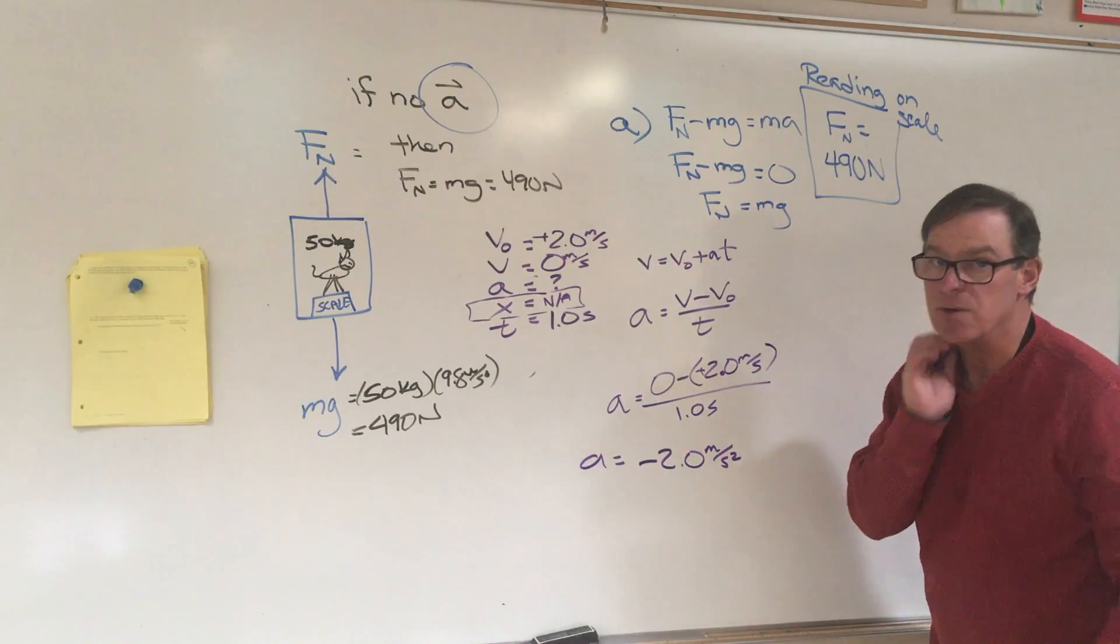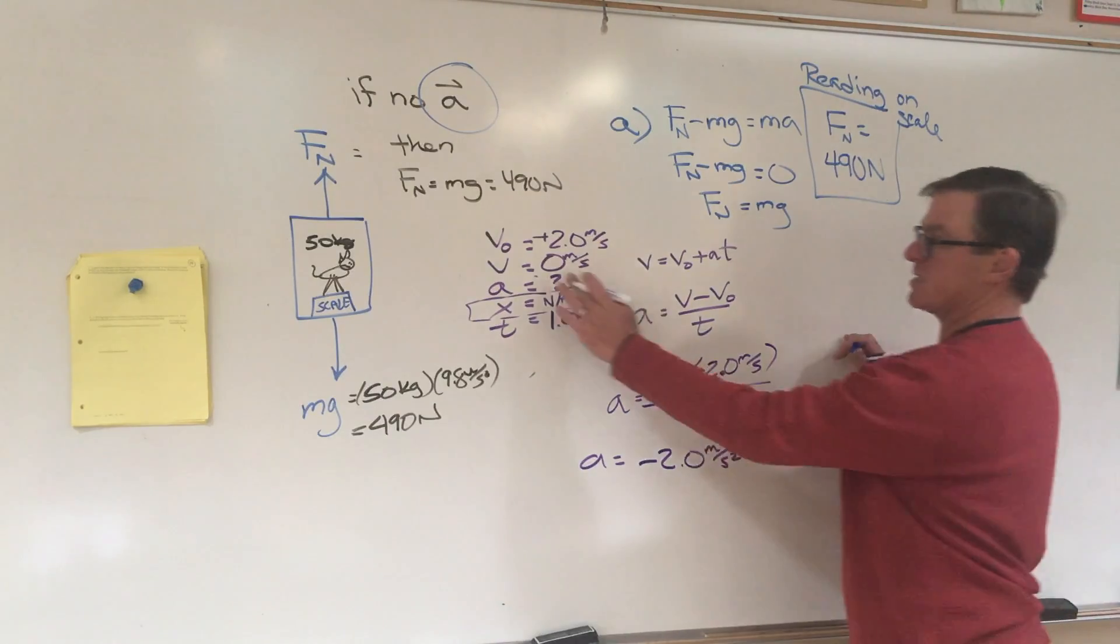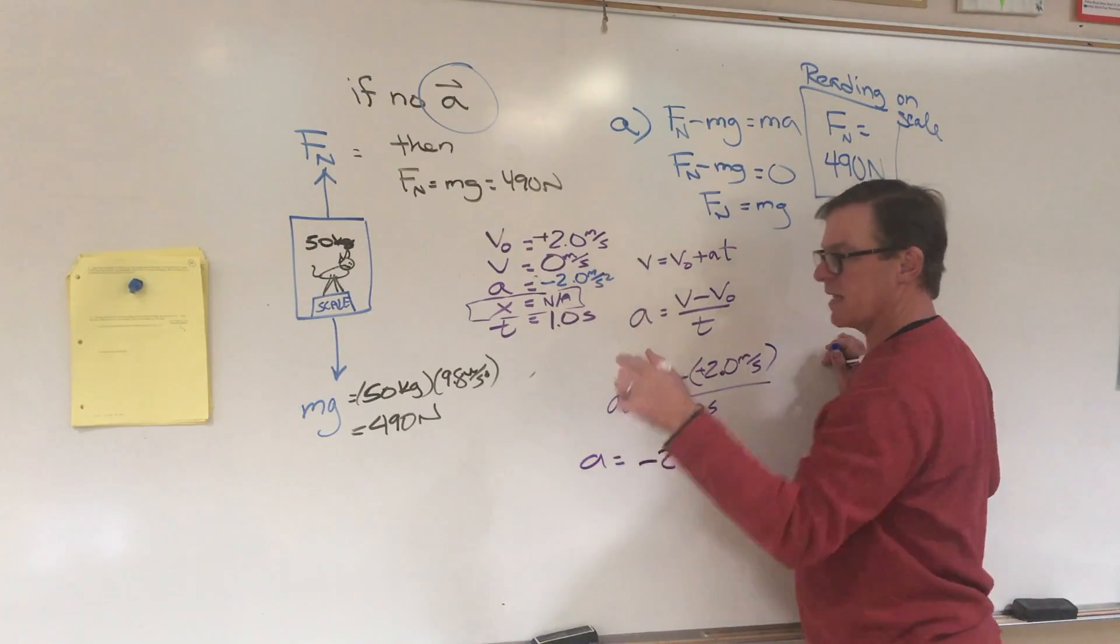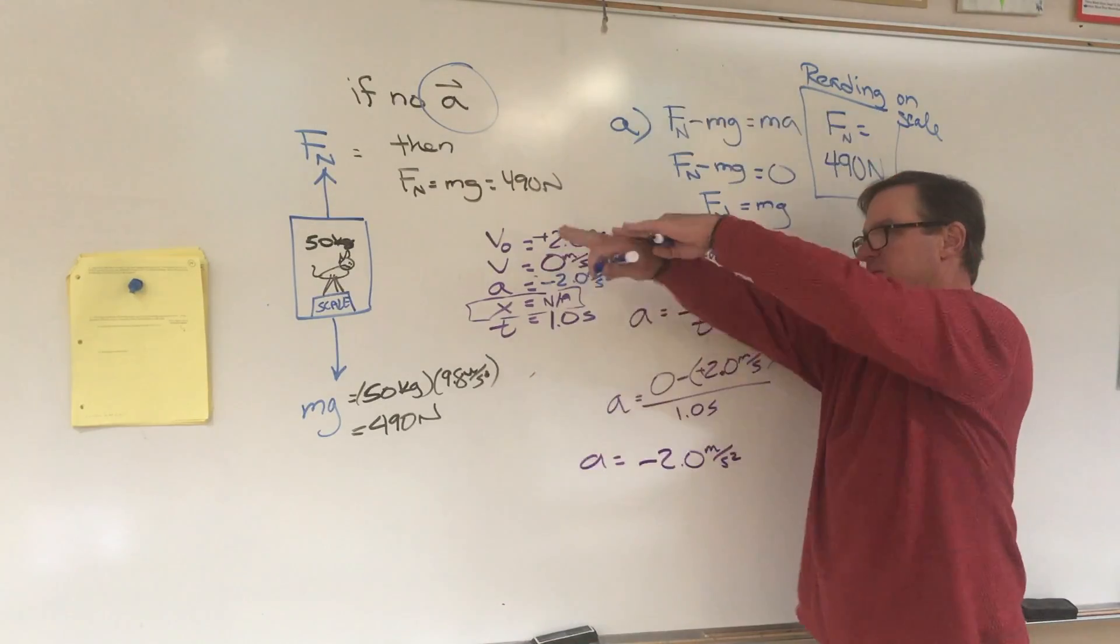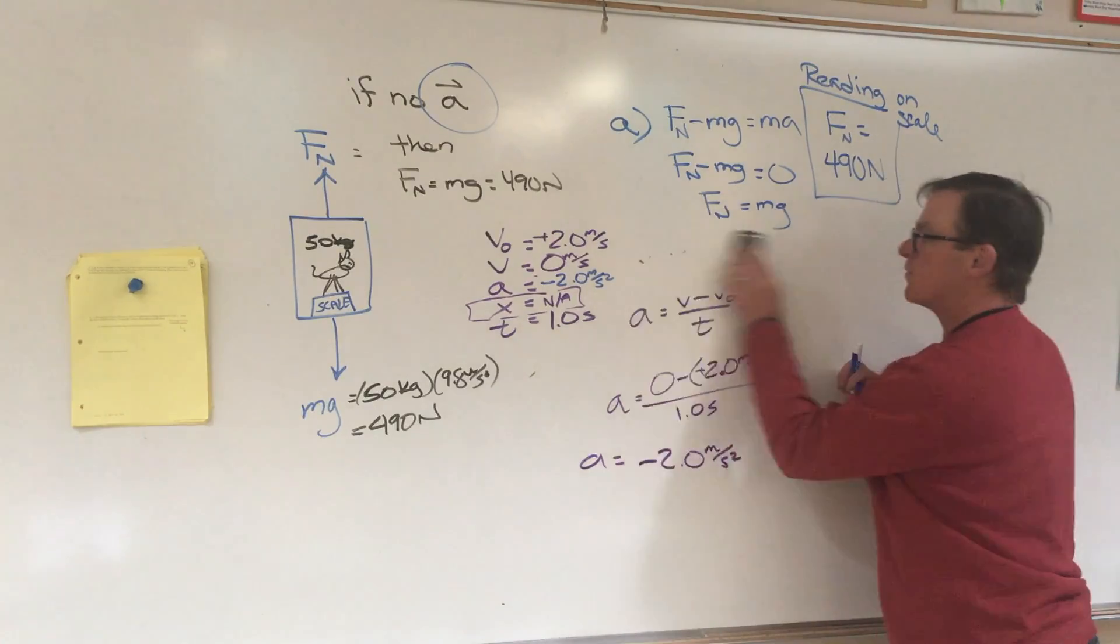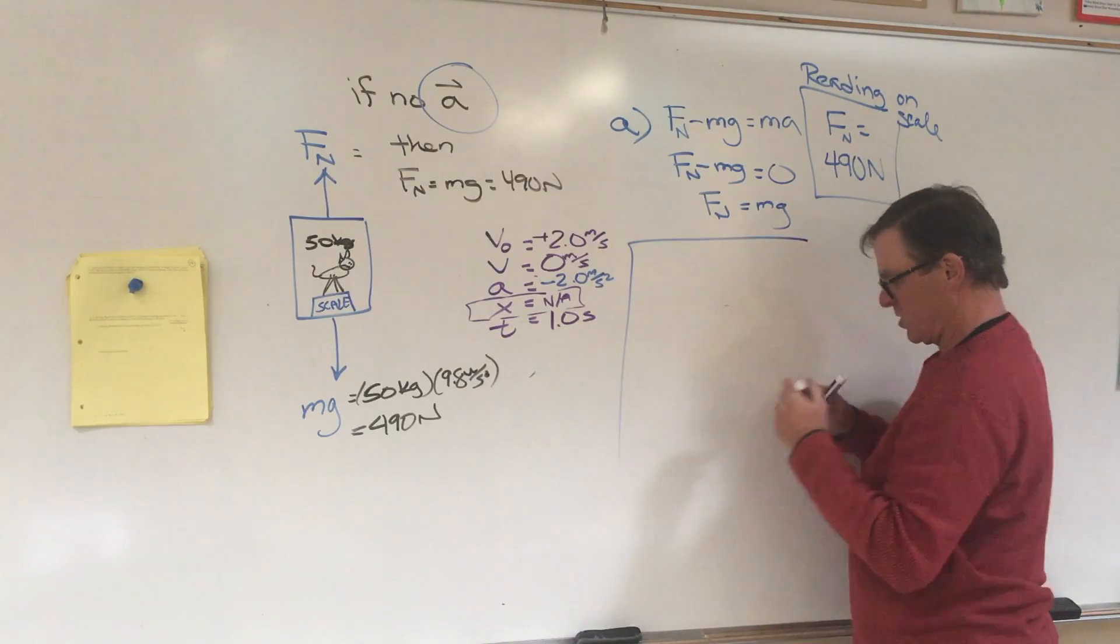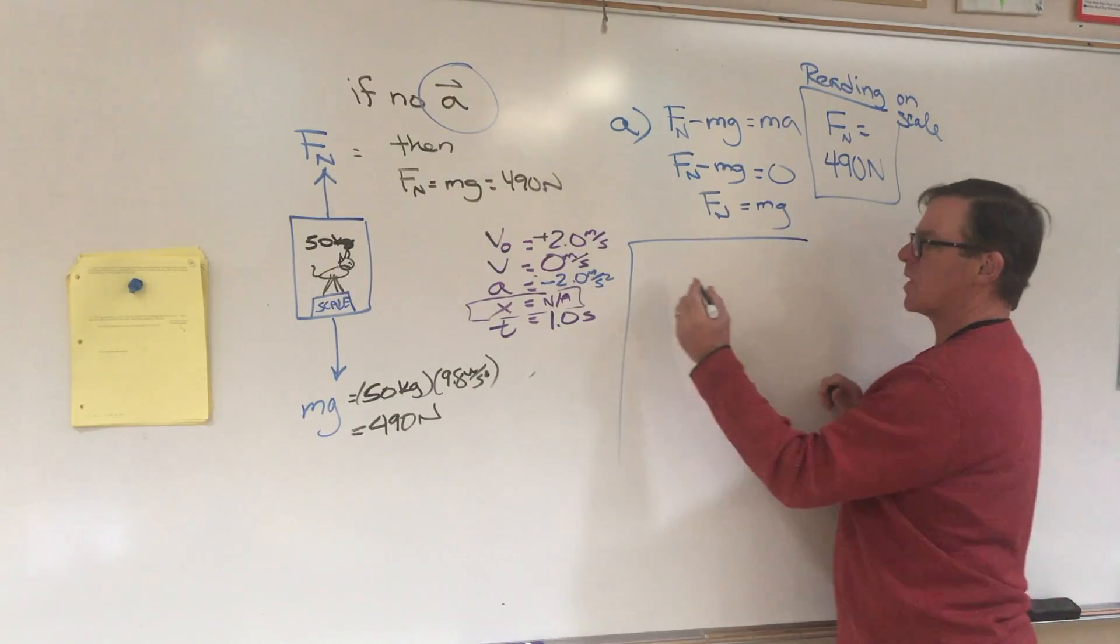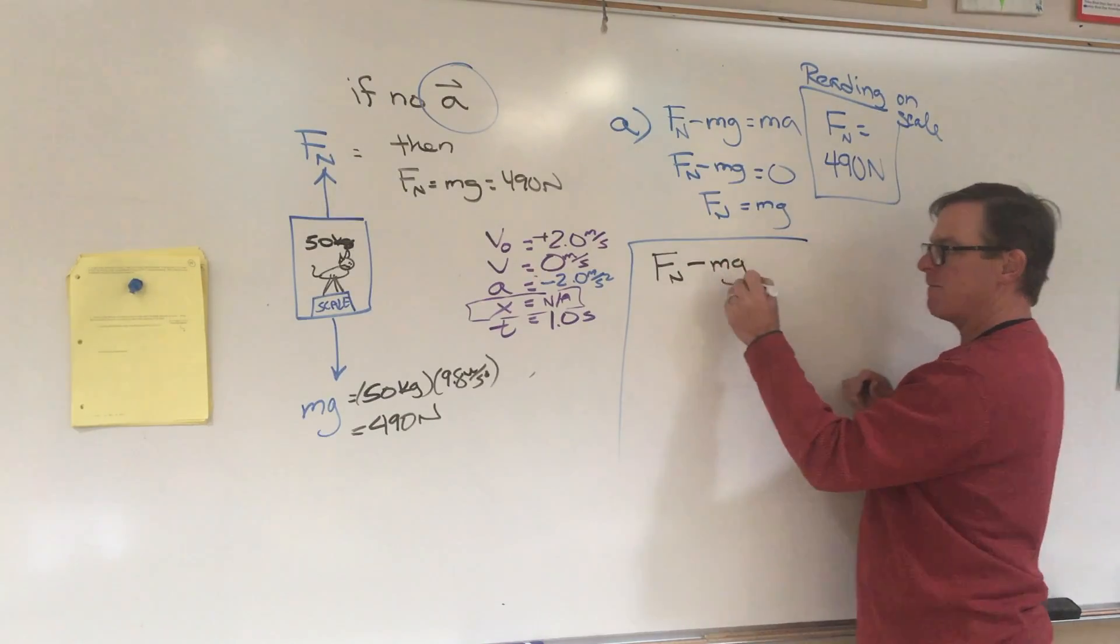During the acceleration, we know the acceleration is negative 2 meters per second squared. Acceleration is actually in the downward direction because you were going up and you stopped, so that net force is downward. So for part B, we want to know the reading on the scale.